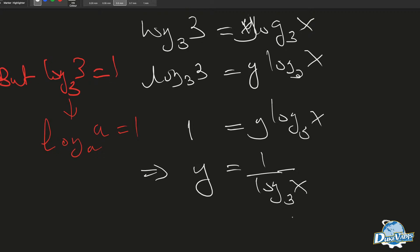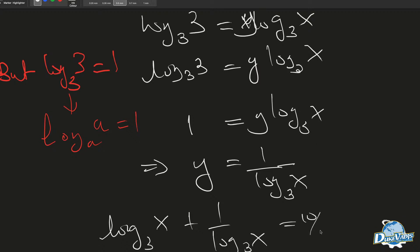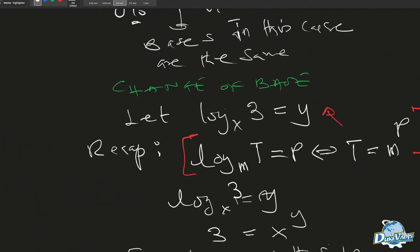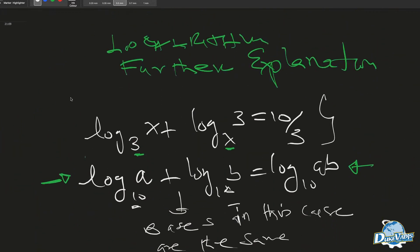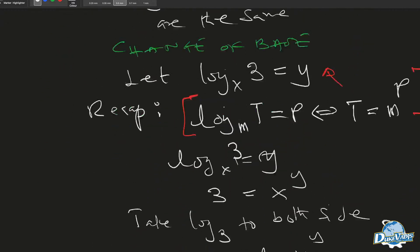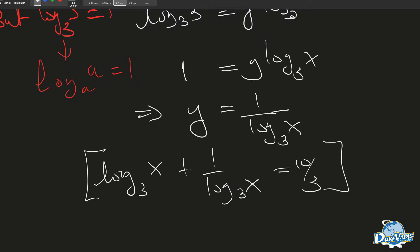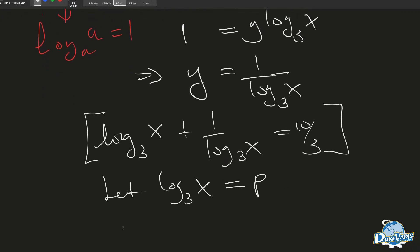So now let's go back and substitute this into the equation. Our equation becomes log base 3 of x plus 1 over log base 3 of x equals 10 over 3. We can do further substitution. Let log base 3 of x equal p. Then this becomes p plus 1 over p equals 10 over 3.